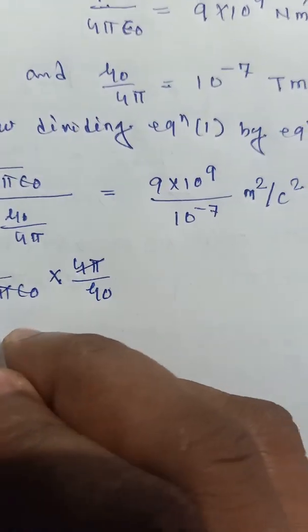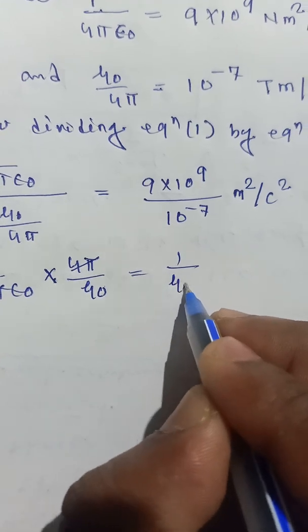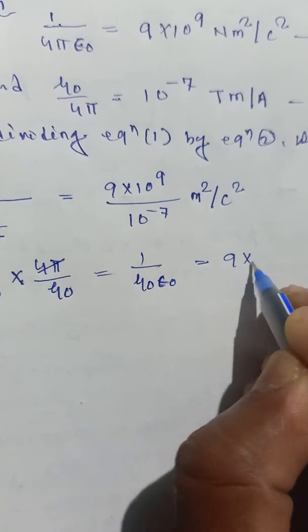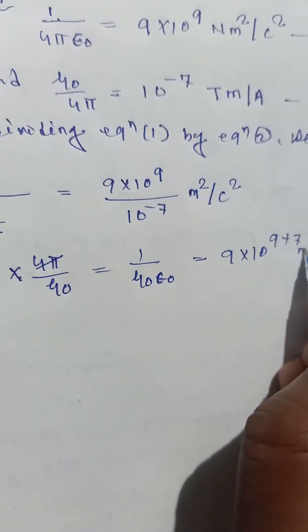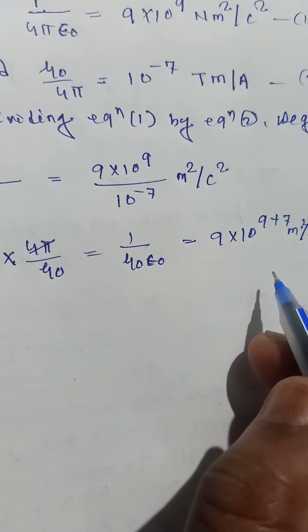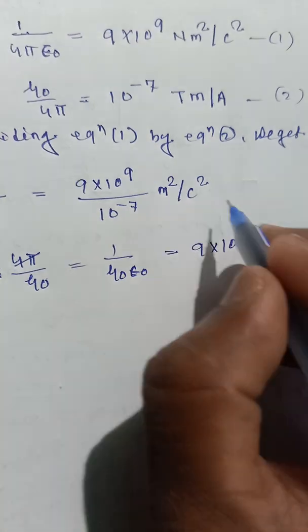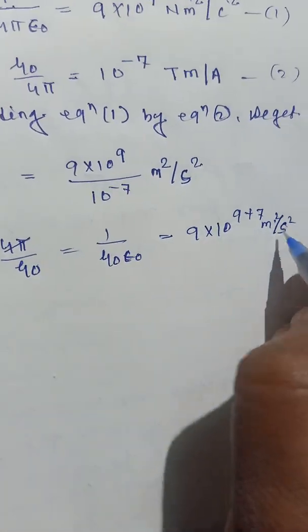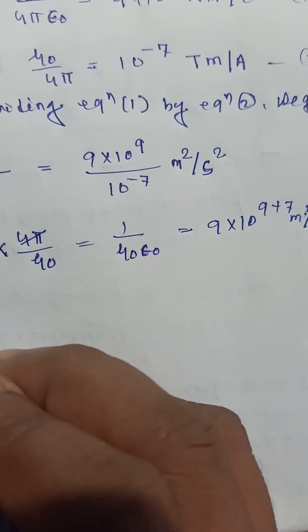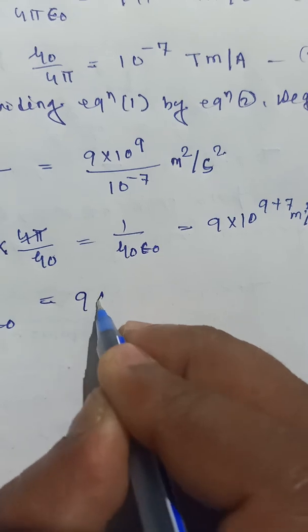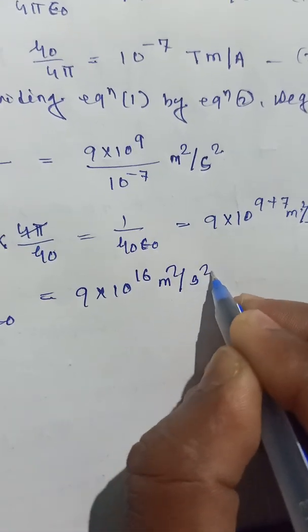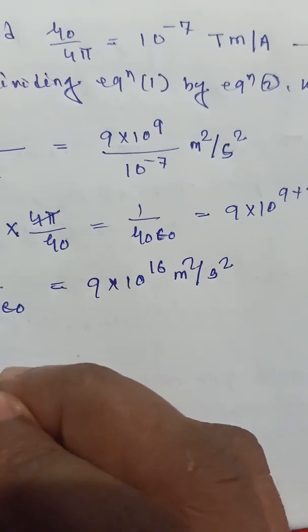The 4π cancels, giving 1 by μ₀ε₀ equal to 9×10⁹⁺⁷ meter square per second square. So 1 by μ₀ε₀ equals 9×10¹⁶ meter square per second square.